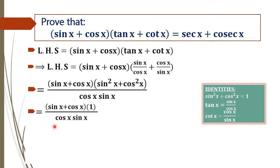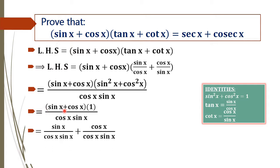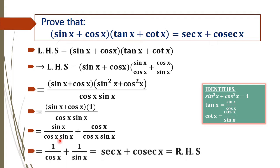By doing a simple step we can reach the right hand side. We rearrange the term as sin x / (cos x · sin x) + cos x / (cos x · sin x). Just as (a + b) / c = a/c + b/c, we rearrange in the same way. We cancel sin x in the numerator and denominator of the first term, and cos x in the numerator and denominator of the second term, giving us 1 / cos x and 1 / sin x.